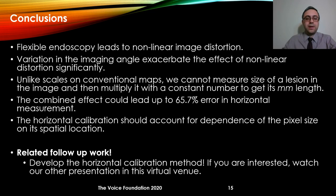In conclusion, flexible endoscopy leads to non-linear image distortion. Variation in imaging angle exacerbates the effect of non-linear distortion. Unlike a scale on conventional maps, we cannot measure the size of a lesion in the image and multiply it by a constant number to get its millimeter size. The analysis showed that the combined effect could lead to as high as 65 percent error in horizontal measurement, and horizontal calibration should account for the dependence of pixel size on its spatial location. If you are interested in how to account for spatial location during calibration, please see our other presentation in this virtual venue.